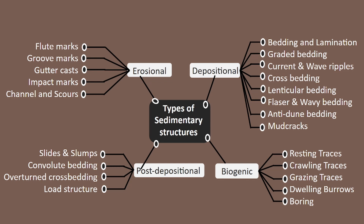Bedding, lamination, graded bedding, etc. are examples of depositional sedimentary structure. Slide and slumps, convolute bedding, overturned cross bedding, and load structure are examples of post-depositional sedimentary structure. And some examples of biogenic structure are resting traces, crawling traces, boring, etc.